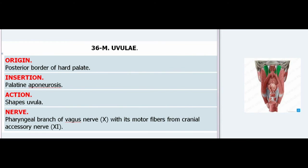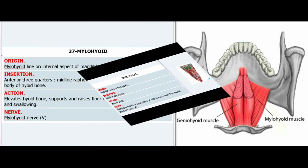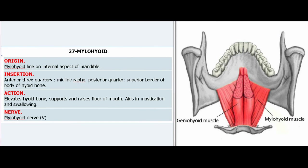36. Musculus Uvulae. Origin: Posterior border of hard palate. Insertion: Palatine aponeurosis. Action: Shapes uvula. Nerve: Pharyngeal branch of vagus nerve with its motor fibers from cranial accessory nerve (XI).